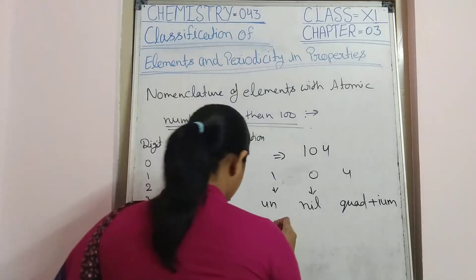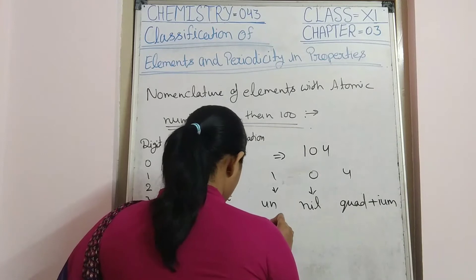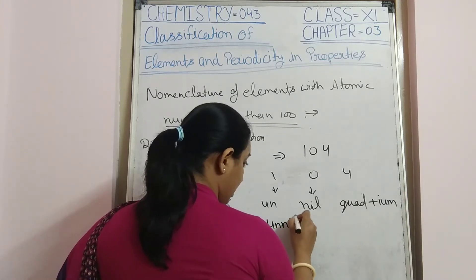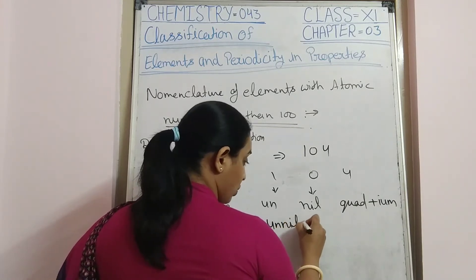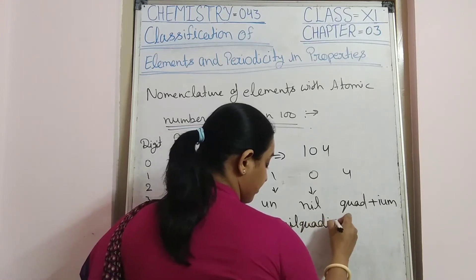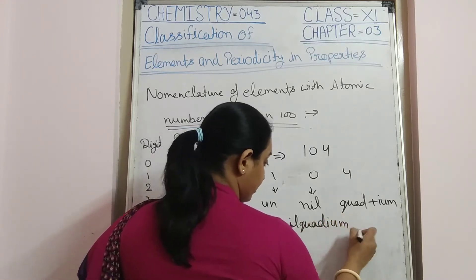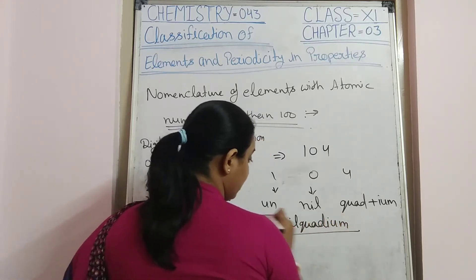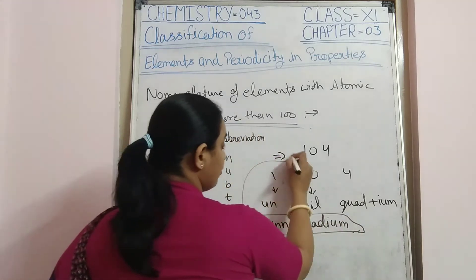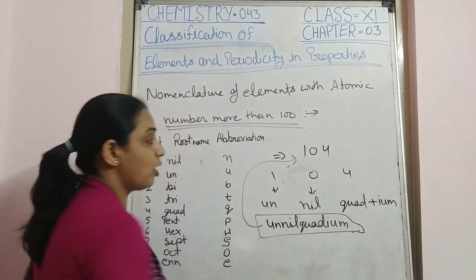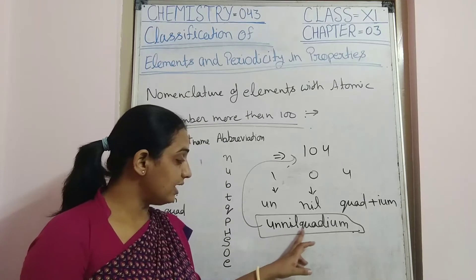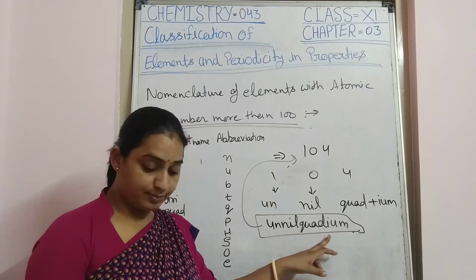So the full name for atomic number 104 is un-nil-quad-ium, that is 'unnilquadium'.